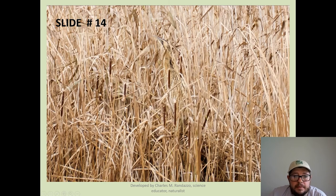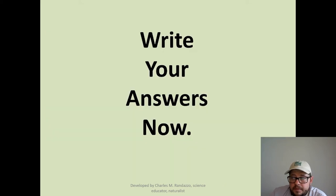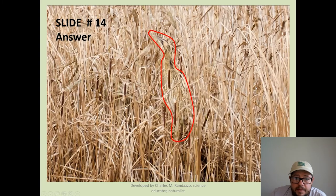What do we have here? A bunch of grass, some cattails. What do you see? Can you find the camouflaged animal? Did you find it? It was another bird — an American bittern, looking like a tall piece of grass himself.